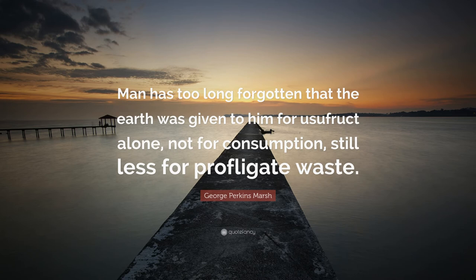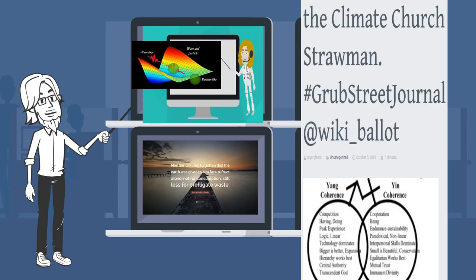George Perkins Marsh had an altogether more measured, both in tone and metrologic senses: All nature is linked together by invisible bonds, and every organic creature, however low, however feeble, however dependent, is necessary to the well-being of some other among the myriad forms of life. Man has too long forgotten that the earth was given to him for usufruct alone, not for consumption, still less for profligate waste. George Perkins Marsh: Sight is a faculty, seeing is an art. Wherever modern science has exploded a superstitious fable or even a picturesque error, she has replaced it with a grander and even more poetical truth.